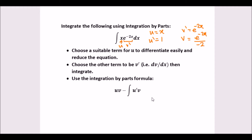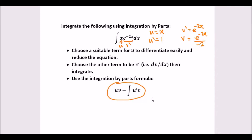Now we just apply the integration by parts formula and see what happens. So uv is going to be u times v, which is x times this term. We can take the negative half outside, so it would be minus 1 over 2 times x times e to the negative 2x. Then minus the integral of u prime times v, where u prime is 1, giving us plus one half times e to the negative 2x dx.